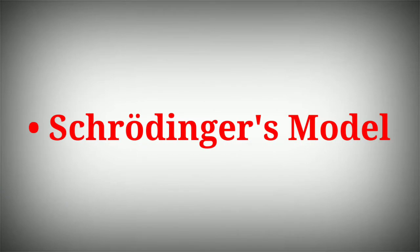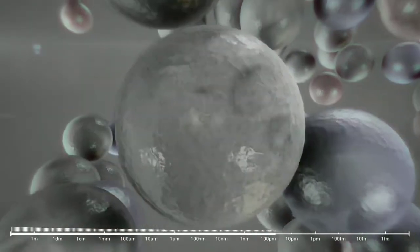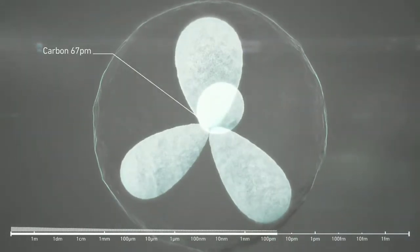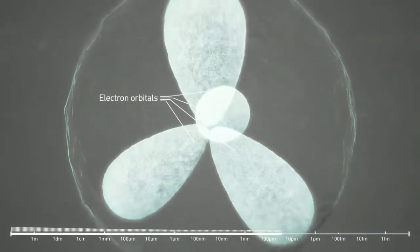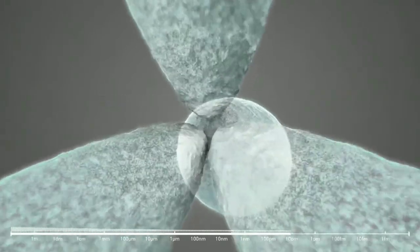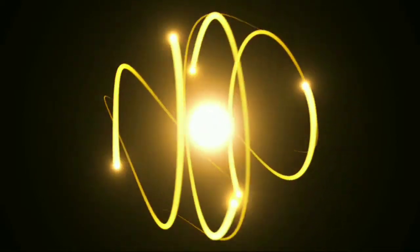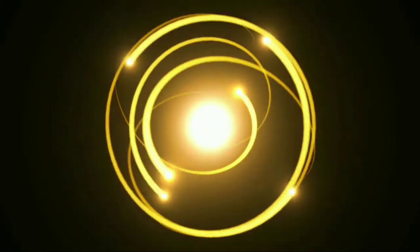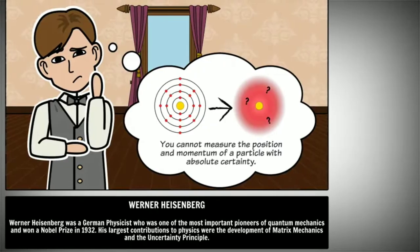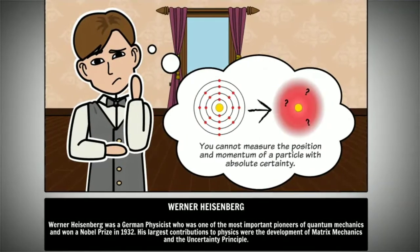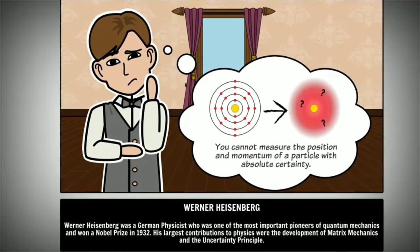Schrödinger model, Schrödinger equation: A mathematical model of the atom that describes the electrons as three-dimensional waveforms rather than point particles. A consequence of using waveforms to describe particles is that it is mathematically impossible to obtain precise values for both the position and momentum of a particle at a given point in time. This became known as the uncertainty principle, formulated by Werner Heisenberg in 1927.